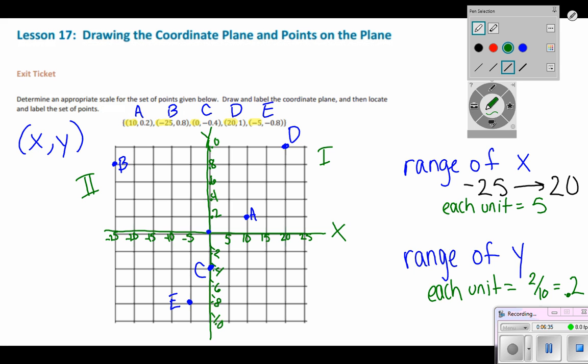Point C is a positive negative, which would be... not in quadrant at all, it would be actually on the y-axis, because there's a zero. Point D is a positive positive, which is, again, in quadrant one, and point E is a negative negative, point E should be found in quadrant three.